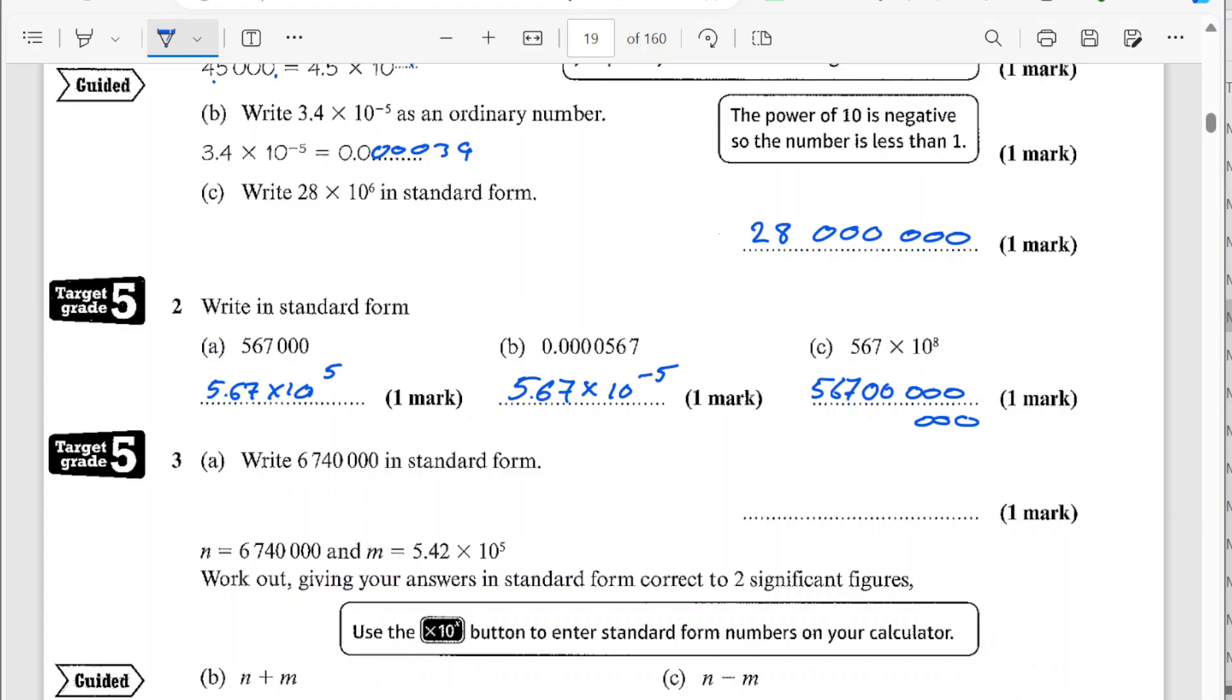I write this number in standard form, so this is going to become, decimal point's going to go there. So my number's going to be 6.74 and I've moved the decimal point 6 places, so times 10 to the 6.